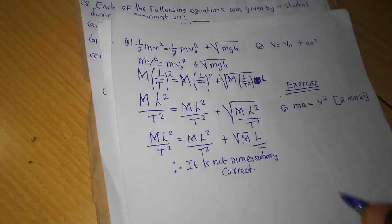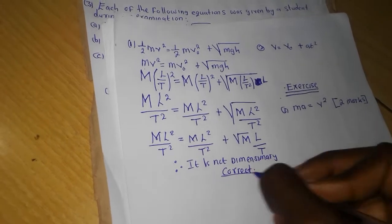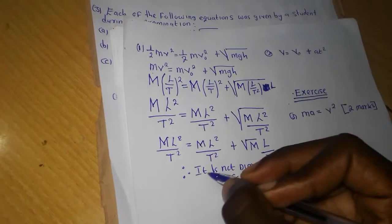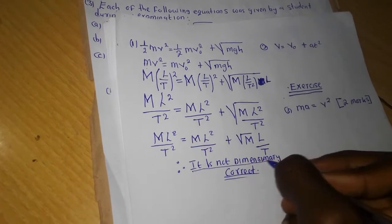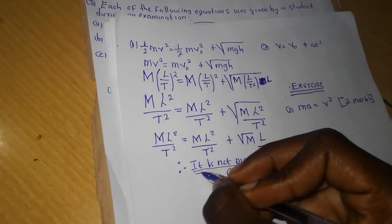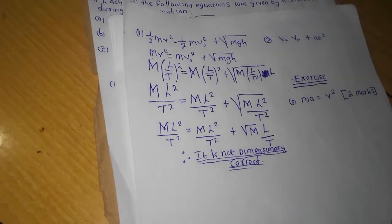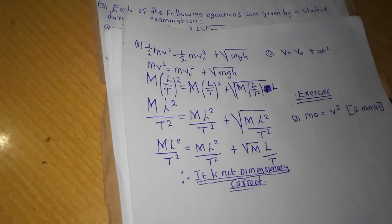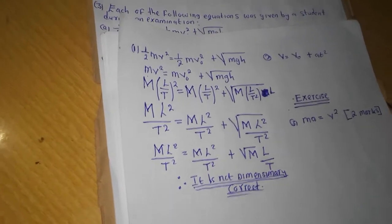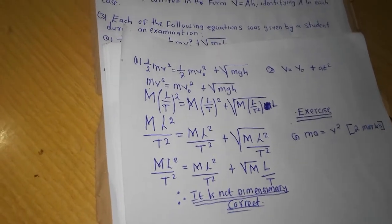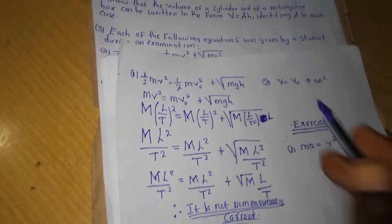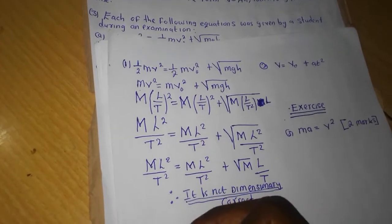So this is just about being dimensionally correct. We are just trying to prove whether a formula holds — if a formula is correct or if a formula is not correct. We have this next question here.